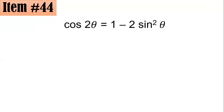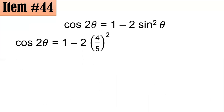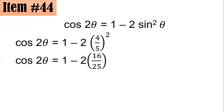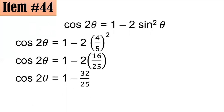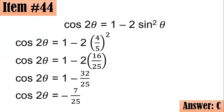Using the double angle identity, cosine 2 theta equals 1 minus 2 sine squared theta. Since sine theta equals 4 fifths, substituting gives cosine 2 theta equals 1 minus 2 times (4 fifths) squared. The square of 4 fifths is 16 over 25. Multiplying negative 2 by 16 over 25 gives negative 32 over 25. Then 1 minus 32 over 25 gives negative 7 over 25, letter C.